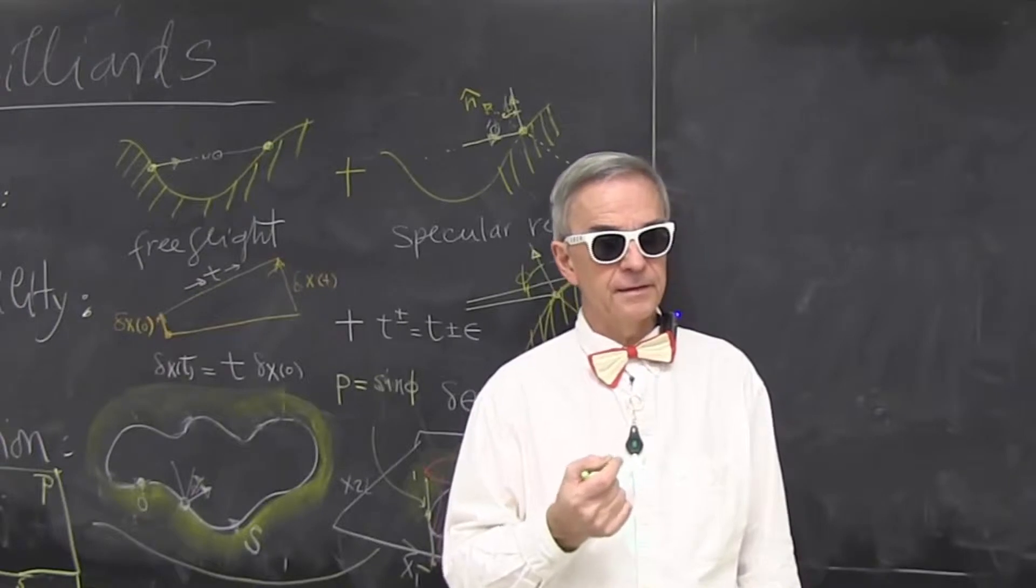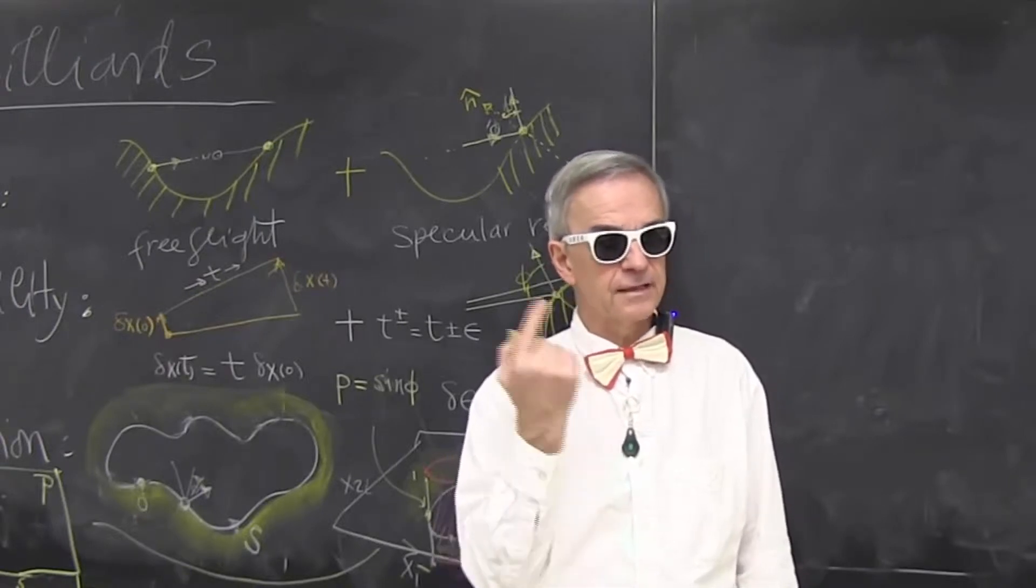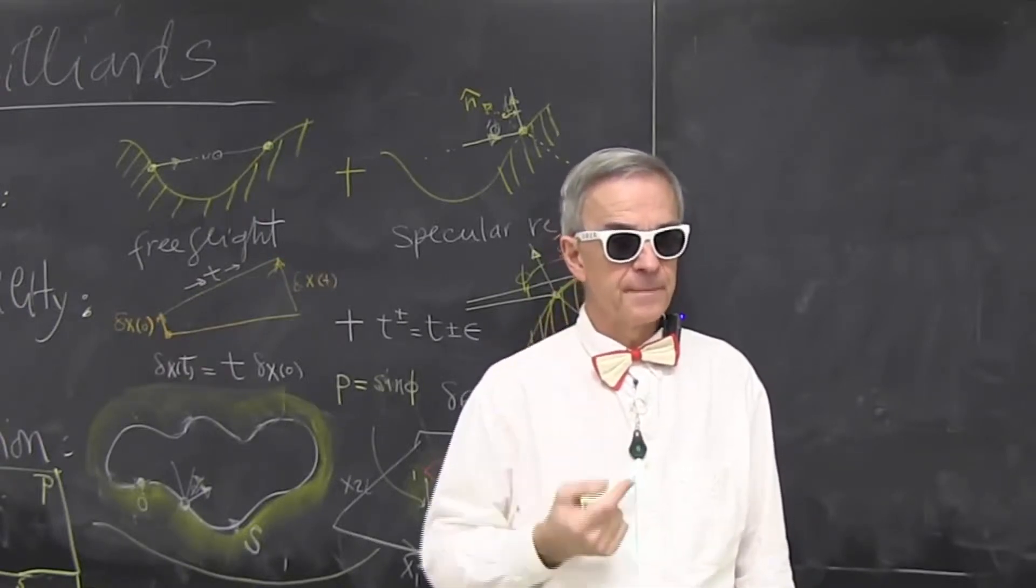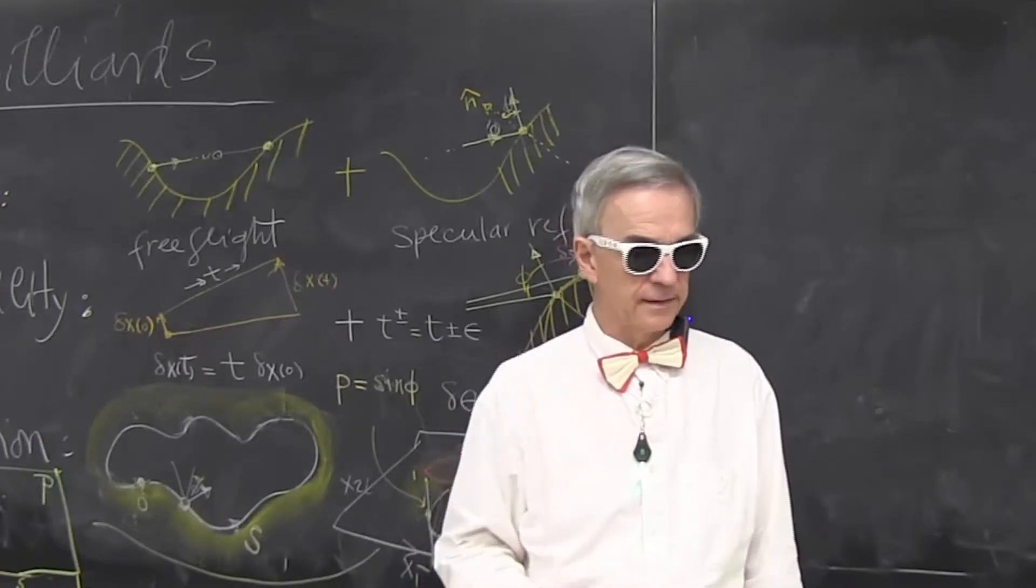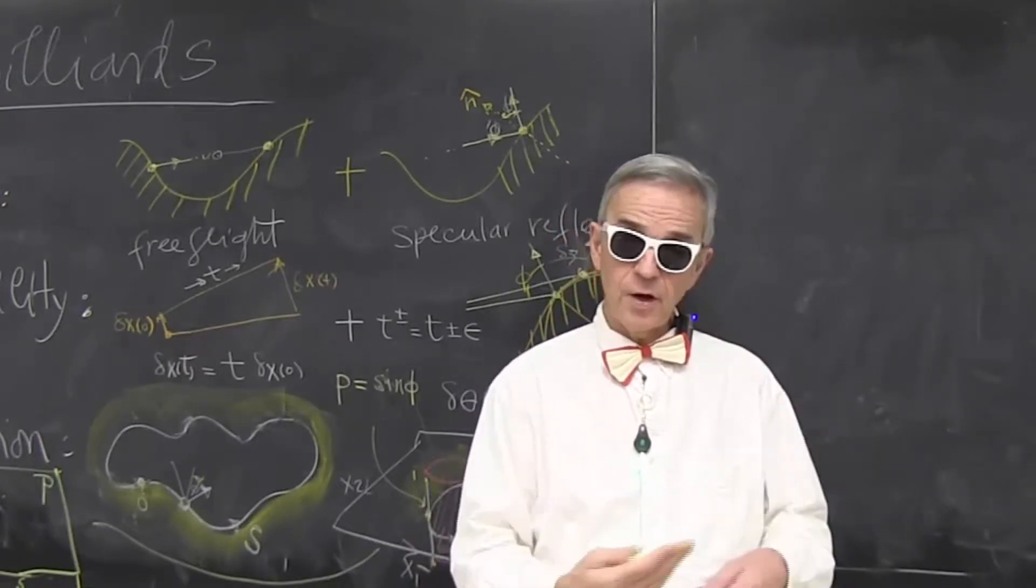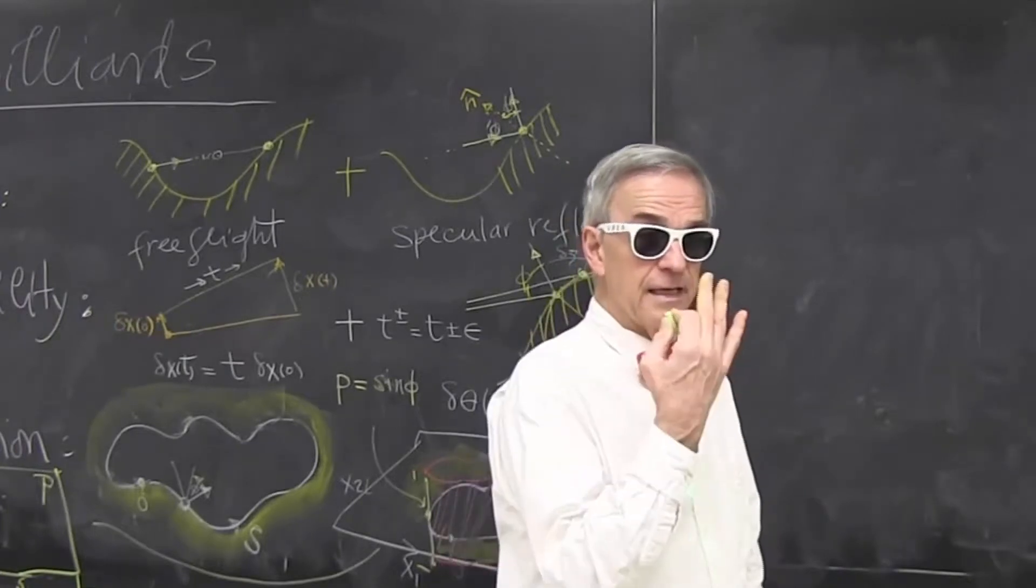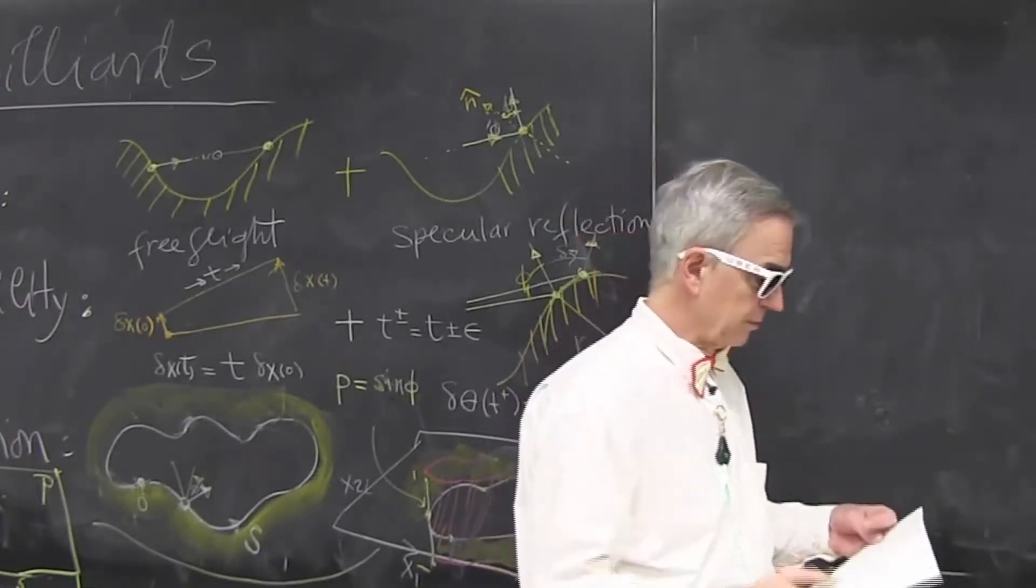If you move a little bit further away, you just get another circle or ellipse. So it's very simple, it's foliated. Chaos is the opposite of this, and billiards are just an incredibly nice intuitive way to do this.